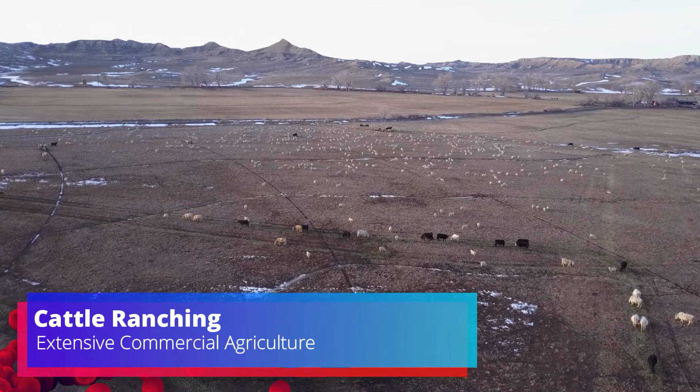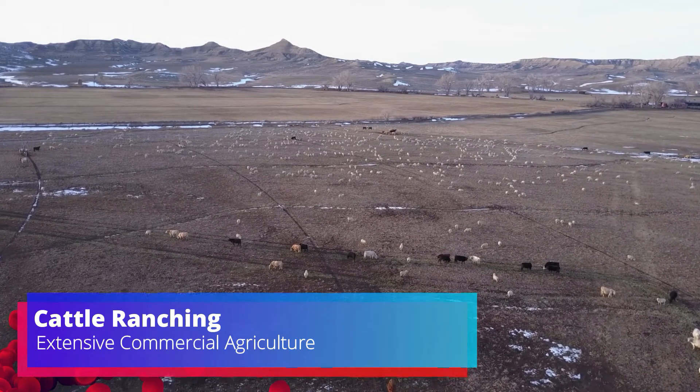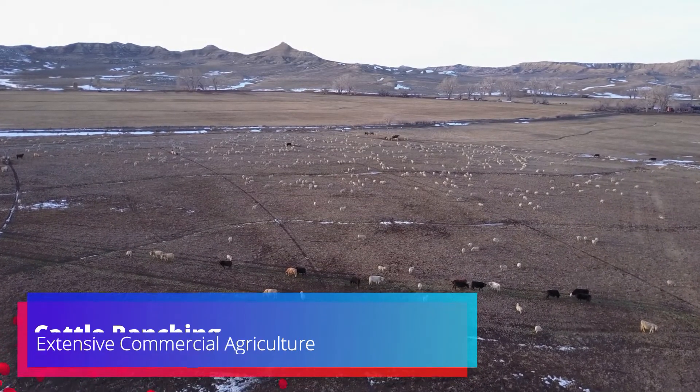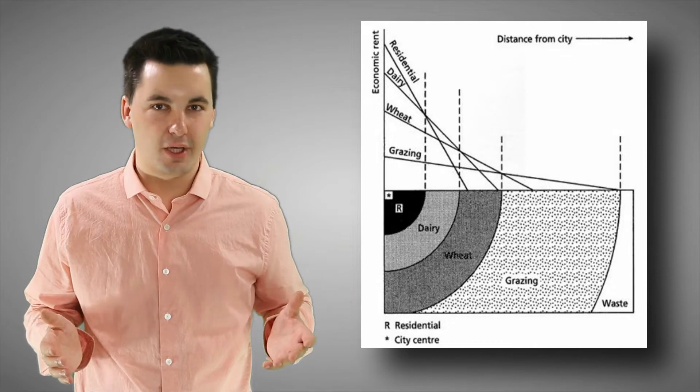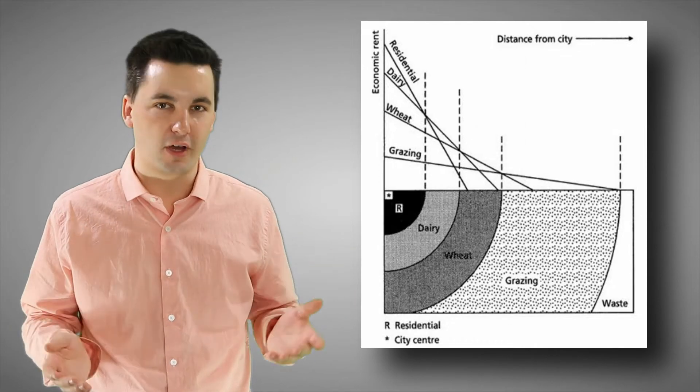But here, the goal is to be able to raise the cattle for sale to make a profit. So we can see that this agricultural practice would be an example of extensive commercial agriculture. Oftentimes, we can see that agriculture that's located near a market or an urban area is going to be intensive agriculture. While agriculture that's located further away from the city or market will require more land and less money and will most likely be extensive agriculture. This is due to the bid-rent theory.